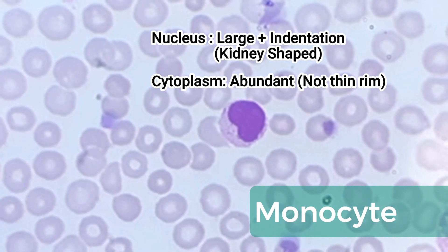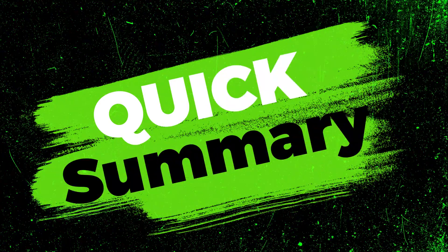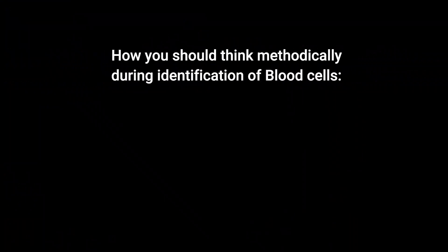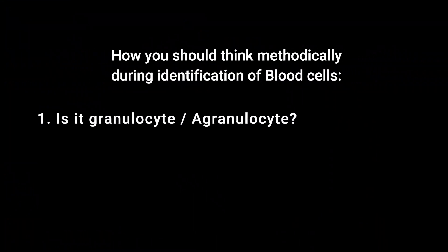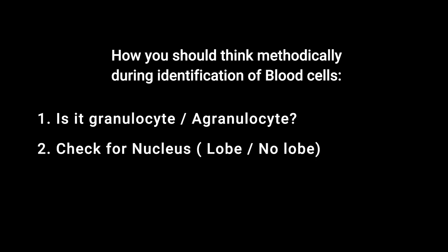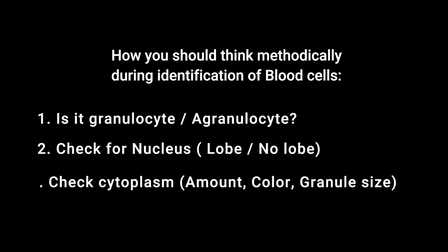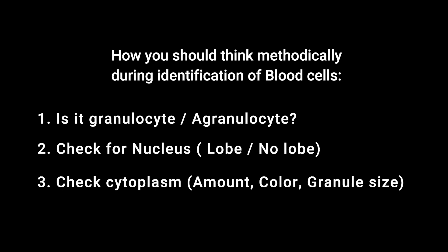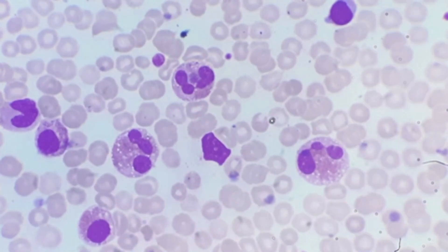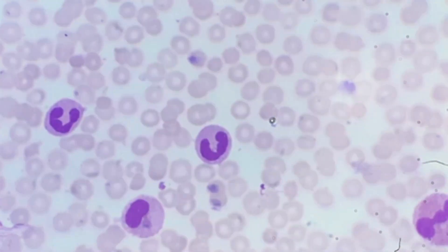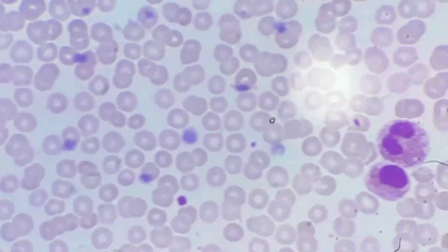Monocyte is the largest cell in blood — that is another identifying point. Let's summarize the whole idea briefly: how you go through the thinking process while identifying cells. First, find out if it is a granulocyte or agranulocyte. Then find out what the nucleus is like — does it have lobes or no lobes? What about the amount, color, and status of the cytoplasm granules? Think this way step by step, and practice examining more and more PBF slides under the microscope — you will be an expert in identifying cells for sure.